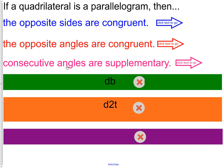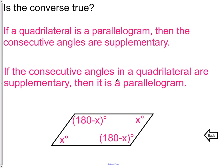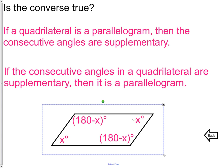Consecutive angles are supplementary — this is also true. When you have two consecutive angles such as x and 180 minus x, that is enough to state that you have a parallelogram. So if any two consecutive angles sum to 180, you do have a parallelogram.